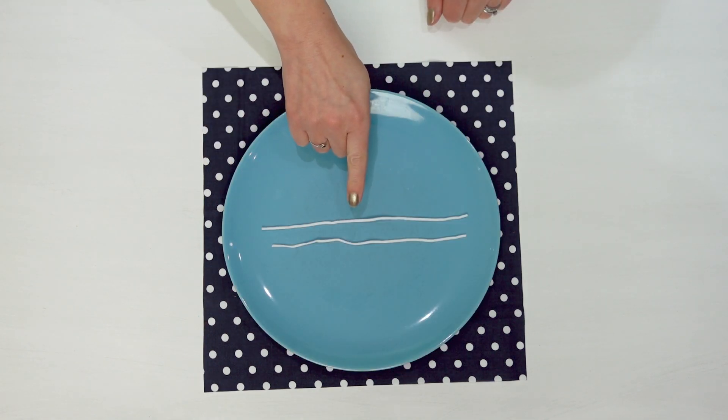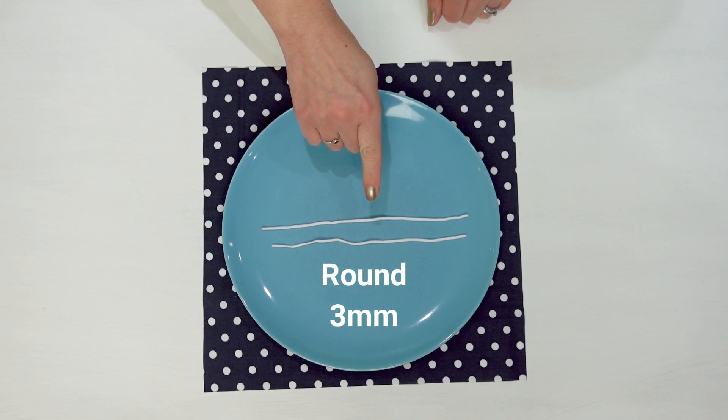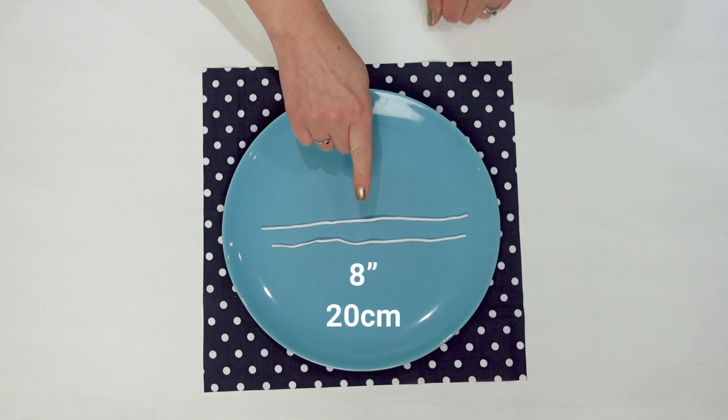You will also need two small pieces of elastic. We're using a round three millimeter elastic but any thin elastic will work just fine. Ours are cut to eight inches or 20 centimeters, but if you're not sure you could cut yours longer and then adjust to fit.